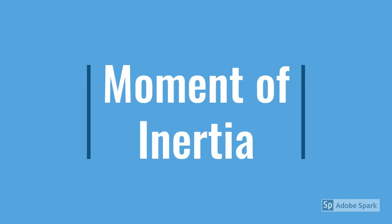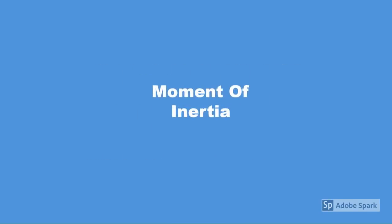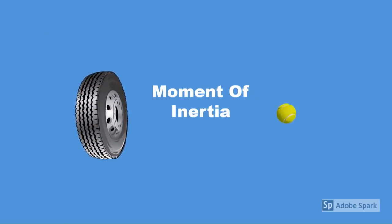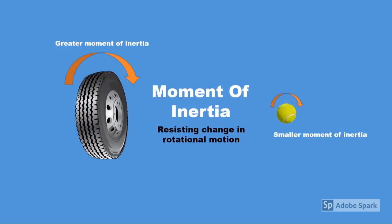But why does this happen? In order to explain this, I would first have to explain something called moment of inertia. A basic way to describe the moment of inertia of an object is to see how easy it is to rotate it. For example, a tire has a greater moment of inertia than a tennis ball because it's much harder to put a tire into rotational motion than a tennis ball. In this way, the moment of inertia of an object resists a change in rotational motion, and an object with a greater moment of inertia is much harder to put into rotational motion.